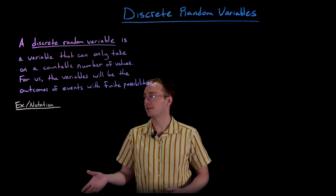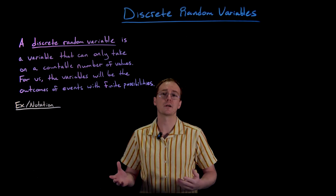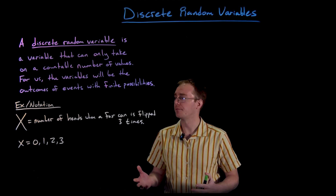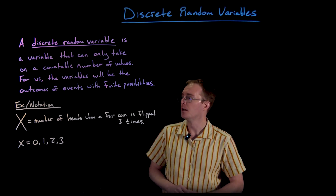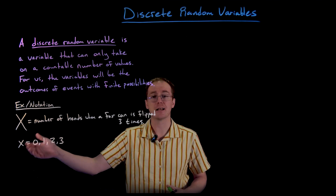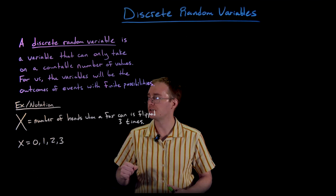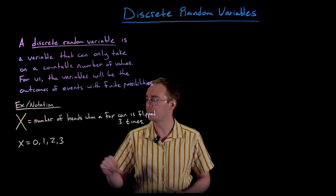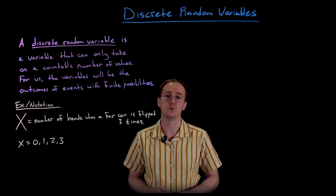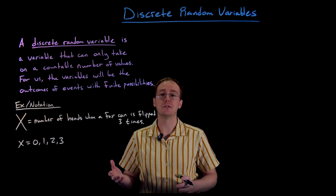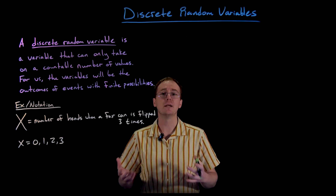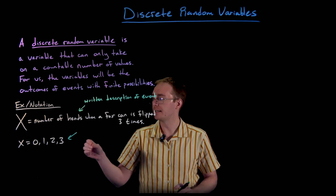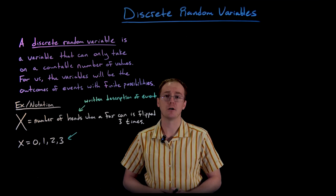Let's look at an example and introduce some common notation. In this notation you'll see a big X as well as a little x. The big X is defined as the number of heads when a fair coin is flipped three times, and little x gives us the numbers or values associated with the different outcomes — 0, 1, 2, and 3.